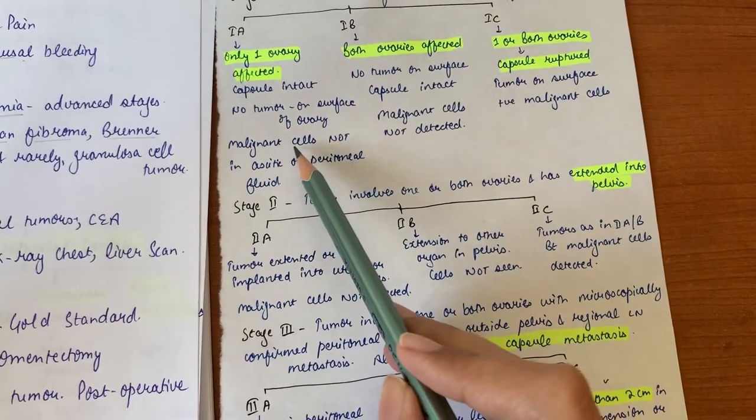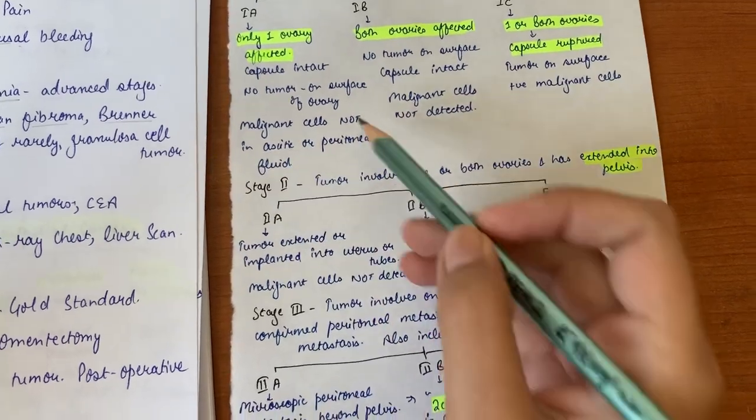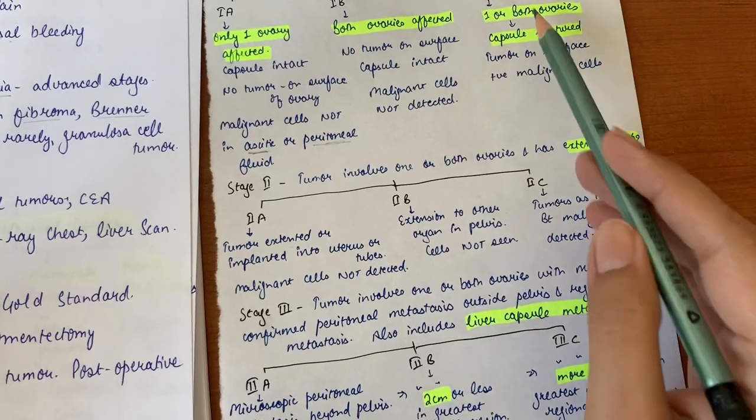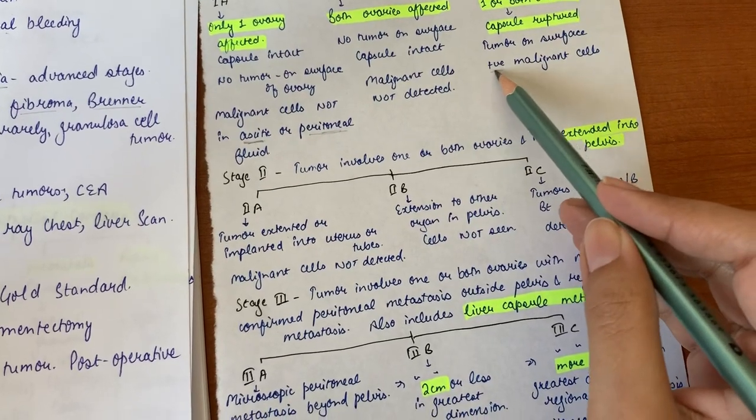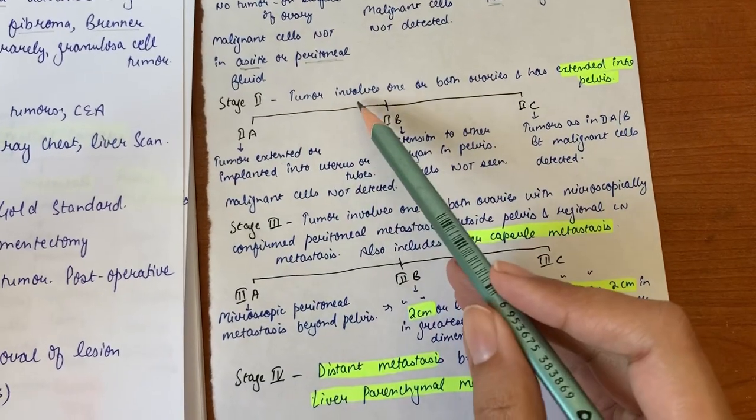Malignant cells in 1a and 1b are not recognized in ascitic or peritoneal fluid if ascites is caused, but in 1c we have positive malignant cells. Then we have stage two - stage two tumor involves one or both ovaries and has extended into pelvis.